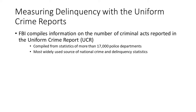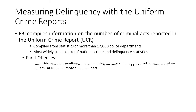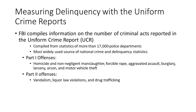Today, we're going to talk about the primary sources of delinquency data. I have the links to these sources up on Moodle, so you can click and have a look. The book tells you there are three official records and surveys, but there's actually four. The main ones we'll talk about are the FBI's Uniform Crime Report, the National Crime Victimization Survey, and the Self-Report Survey.